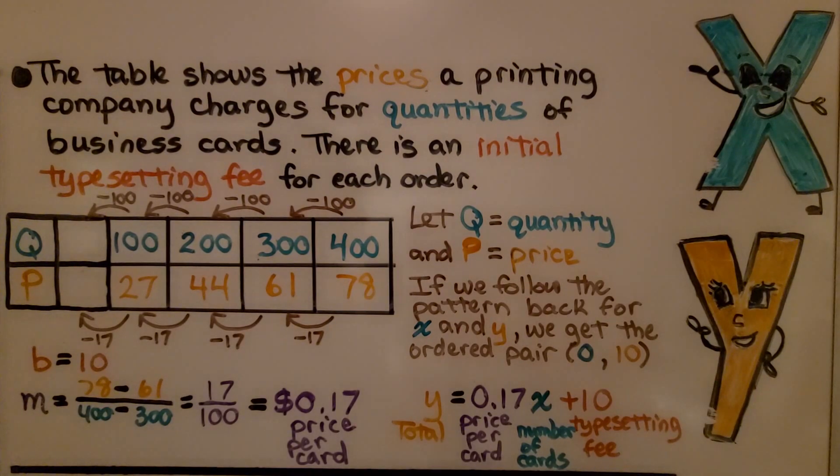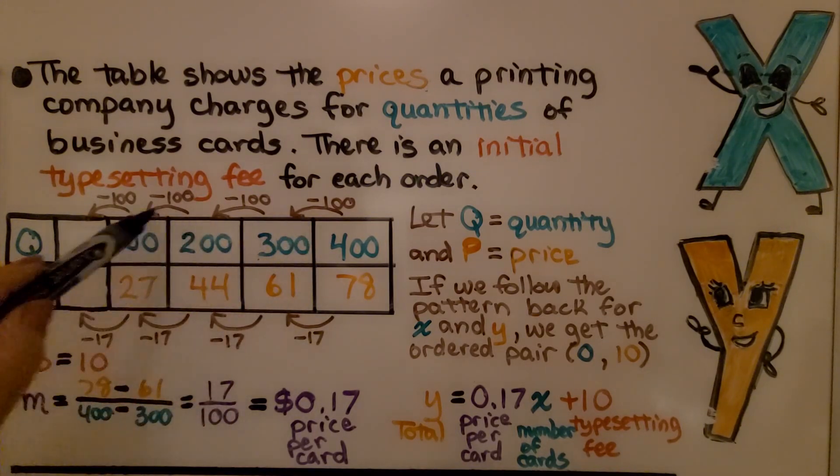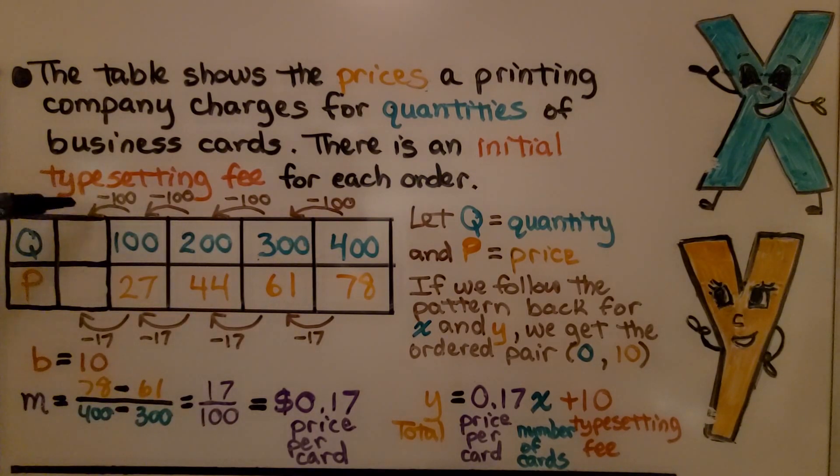Here we have another one. The table shows the prices a printing company charges for quantities of business cards. There's an initial typesetting fee for each order. We're going to let q equal quantity and p equal price. If we follow the pattern back for x and y, we get the ordered pair (0, 10). We look here and see they're going back by 100, which means if we do 100 minus 100, we're going to get 0 for x, or our q.